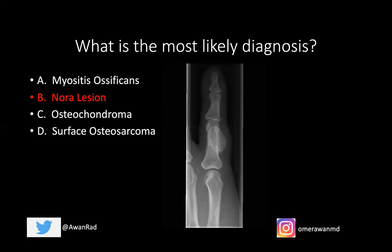The importance of this lesion is not to confuse it with the other differentials. This is not myositis ossificans because that usually happens in the setting of trauma. We usually see ossification within the soft tissues — actually within the muscle — not arising from the bone. We would also expect a zoning pattern where there is more peripheral, mature ossification that then becomes central later. This lesion is really arising from the bone itself, making myositis ossificans less likely.